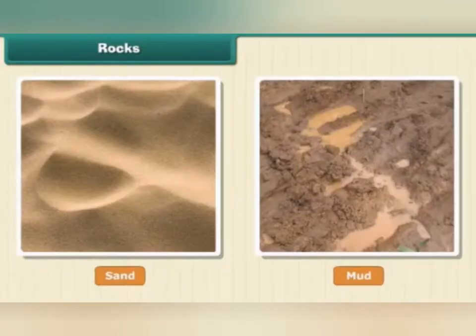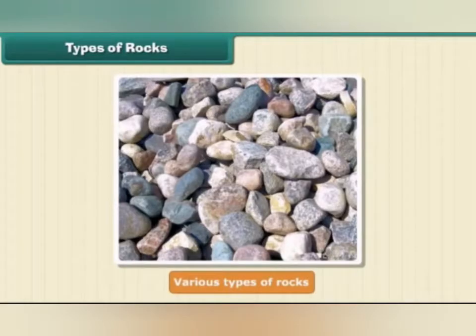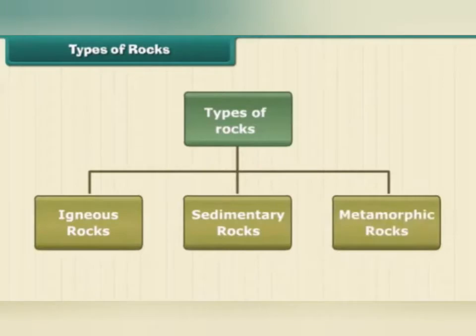Sand and mud are also made up of rocks. The process that breaks down rocks into smaller pieces is called weathering. Now let us learn about the different types of rocks present on the earth's crust. The different types of rocks are igneous rocks, sedimentary rocks and metamorphic rocks.